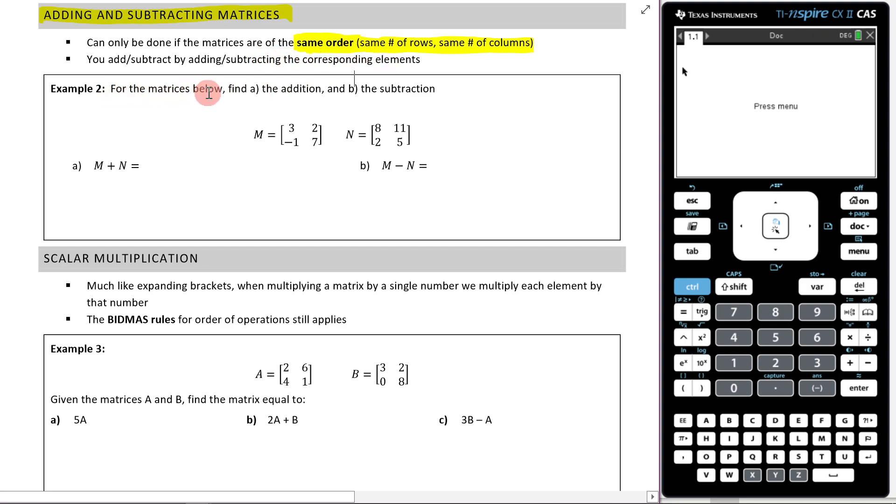So example two, for the matrices below, find A, the addition, and B, the subtraction of each of these. Okay, so let's begin. So here we have M, here we have N. The first thing we want to do is add them together. So what are we going to do here? Well, all you do is you add up the corresponding elements. So we'll go three plus eight.